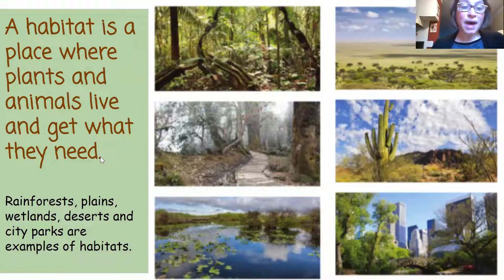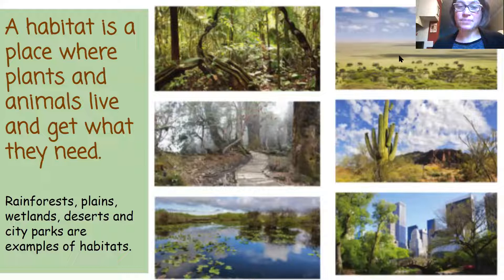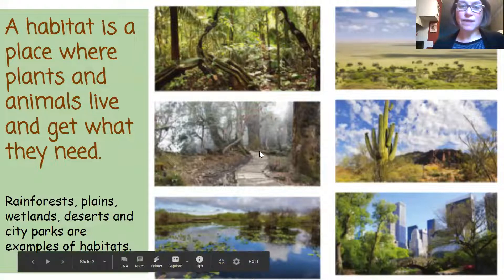Here are some other types of habitats. This is a rain forest. These grasslands are also called the plains. This swamp area — both of these are called wetlands.